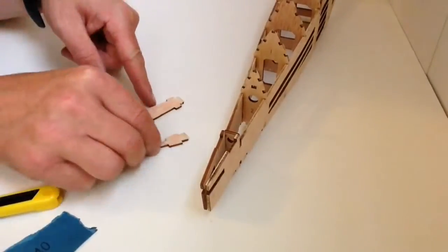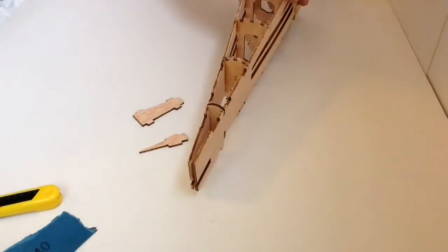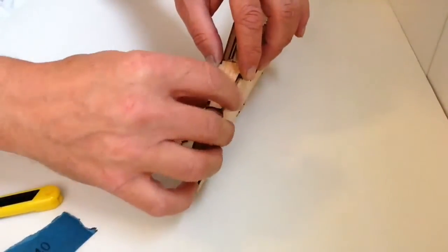And then we're going to take these two sections here and turn the fuselage upside down. Now as you can see, both these sections will go here and here, so we'll just test fit that.